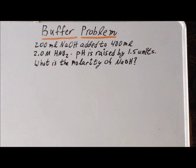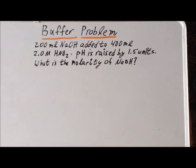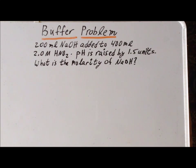Hello again. In this video, we would like to solve the following buffer-related problem. 200 milliliters of a sodium hydroxide solution is added to 400 milliliters of a 2.0 molar nitrous acid. As a result, the pH is raised by 1.5 units. Therefore, we have to calculate the molarity of the original sodium hydroxide solution.